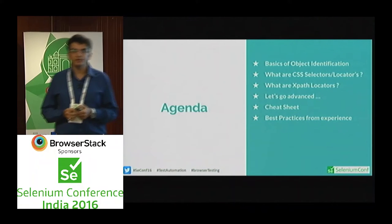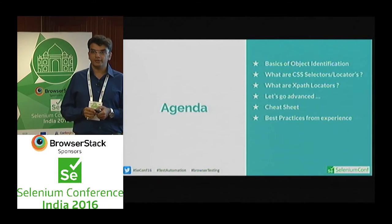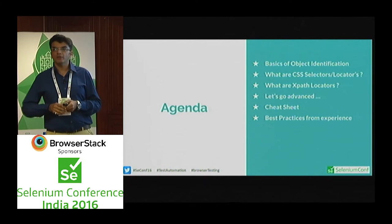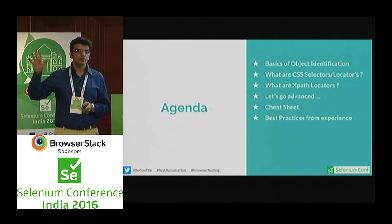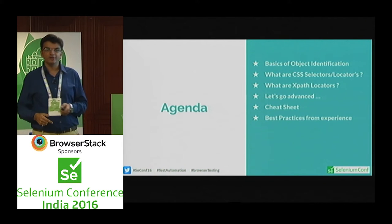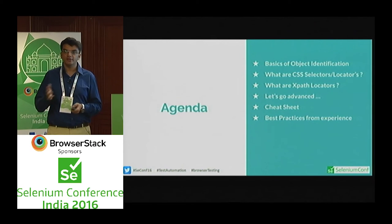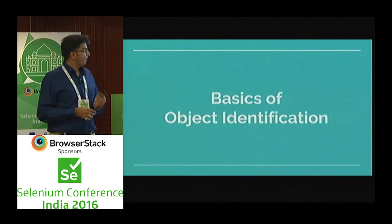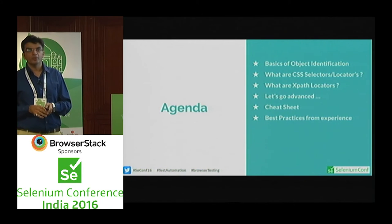What is the agenda for the next 35 to 40 minutes? We cover the basics of object identification, what are CSS selectors or locators as people call them, what are XPath locators, and we go into a bit of advanced locators and how we can play around with that. There is also a ready cheat sheet for you all — just like Unix users keep cheat sheets on their desktops, automators can have this one. And some best practices based on experiences and case studies on problem areas of automators. You can also tweet on the following hashtags to make the Selenium conference more popular on Twitter.